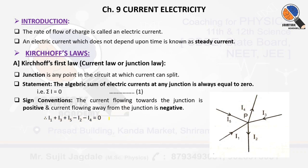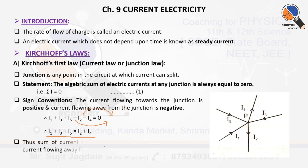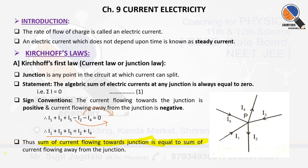If we transfer those negative currents to the right-hand side, they will become positive on the RHS. So the final statement becomes: I1 + I3 + I5 = I2 + I4. From this mathematical statement, we can conclude that the sum of all currents flowing towards the junction is always equal to the sum of currents flowing away from the junction.